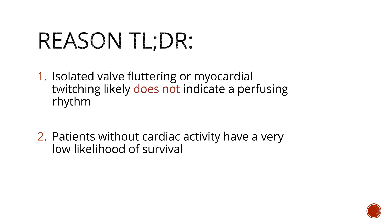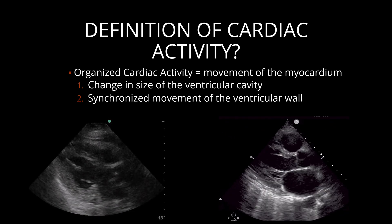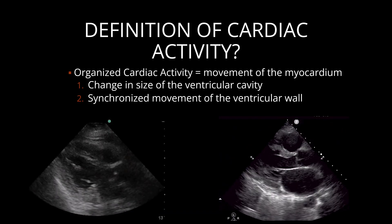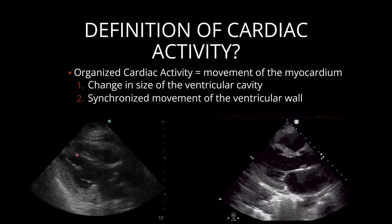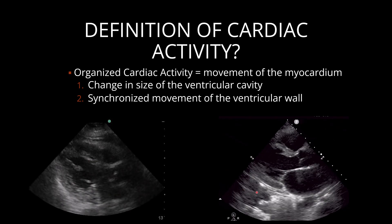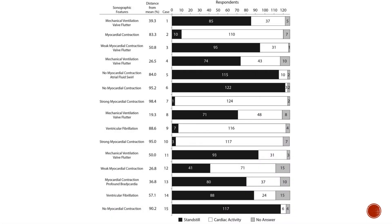The takeaways from the study: isolated valve fluttering or myocardial twitching does not indicate a perfusing rhythm, and patients without cardiac activity had a very low likelihood of survival, but not zero. This brings up a really important point about the definition of cardiac activity — you need to see movement of the myocardium, defined by a change in the size of the ventricular cavity and synchronized movement of the ventricular wall. There's a great study that looked at how different doctors interpret cardiac activity versus cardiac standstill, and there's a lot of variability, especially in cases with valve fluttering.